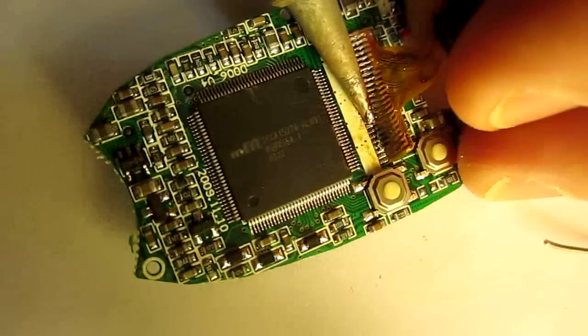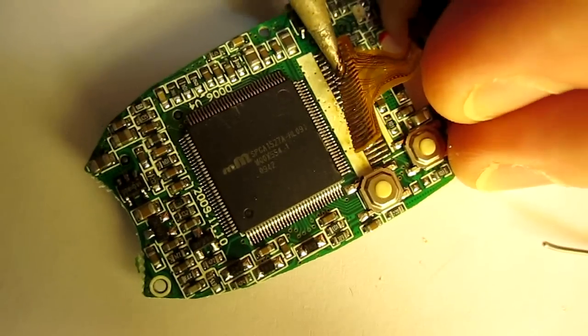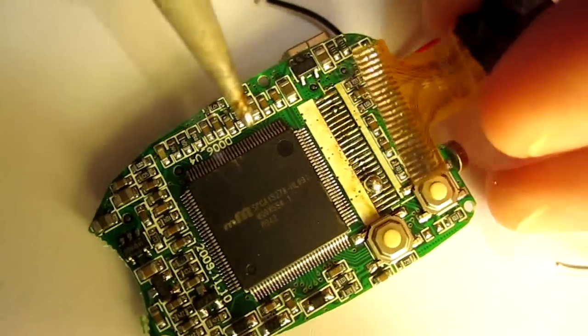I'm using a 1.5mm soldering iron to remove the 24-pin flat cable that's soldered to the printed circuit board.